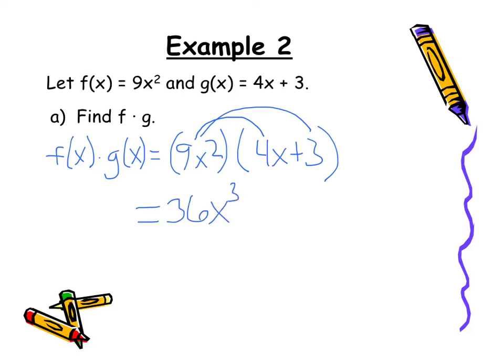Think back to your exponent rules. And then I have 9 times 3 is 27. And then x squared times, well just nothing there so we just have x squared. And there you have it. The product of the two functions.